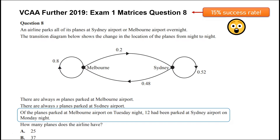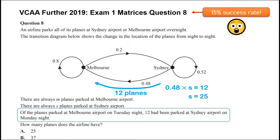The key statement here is: of the planes parked at Melbourne airport on Tuesday, 12 had been parked at Sydney airport on Monday — the night before. Those 12 planes come from Sydney to Melbourne, so they represent 0.48 of the planes at Sydney airport. That lets us solve for the variable s, and we find that s equals 25 planes — there are always 25 planes parked at Sydney airport.